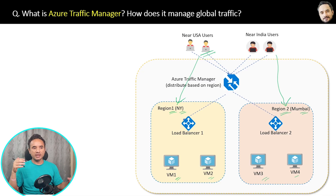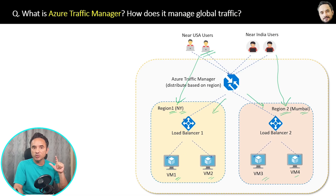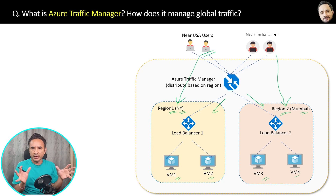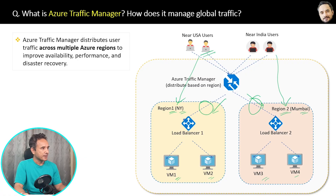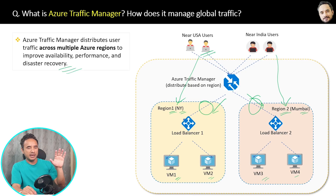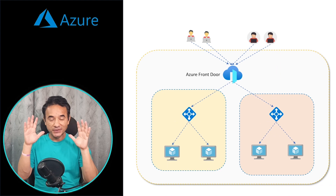Azure Traffic Manager sends USA requests to the New York region and India users' requests to the Mumbai region. You can also combine it with Load Balancer and Application Gateway within each region for further distribution. The simple definition: Azure Traffic Manager distributes user traffic across multiple Azure regions to improve availability, performance, and disaster recovery.